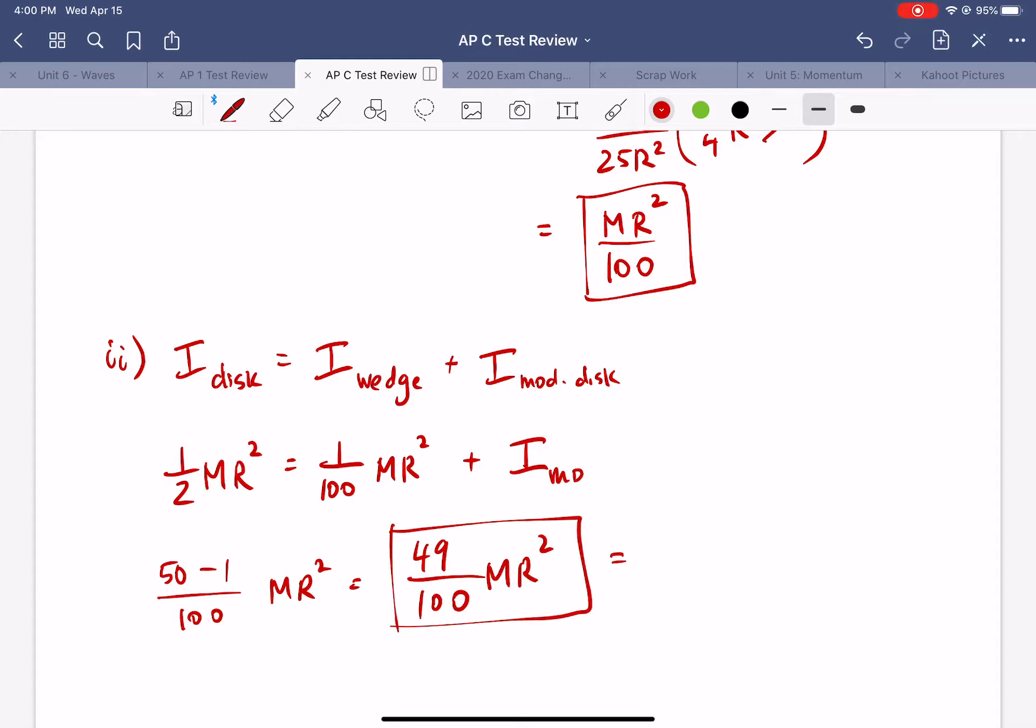I guess if you want to be a little cute you could write it as M times seven tenths R squared as well. All right so that should do it for problem two. Stay tuned for one last video going over problem three.